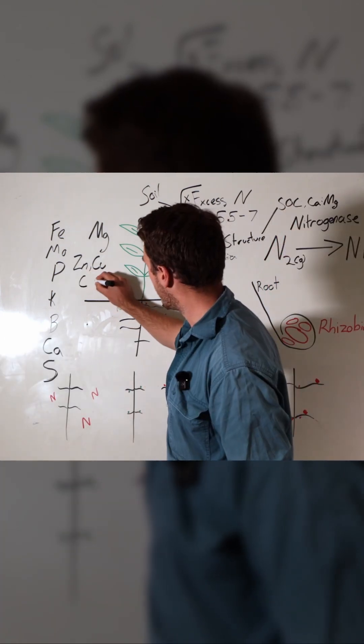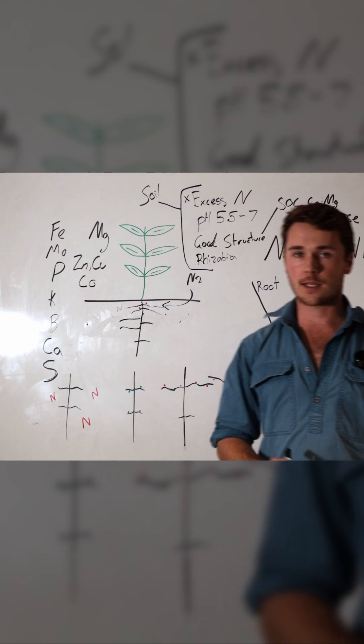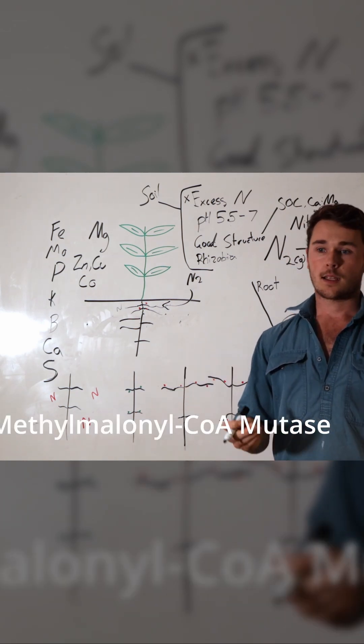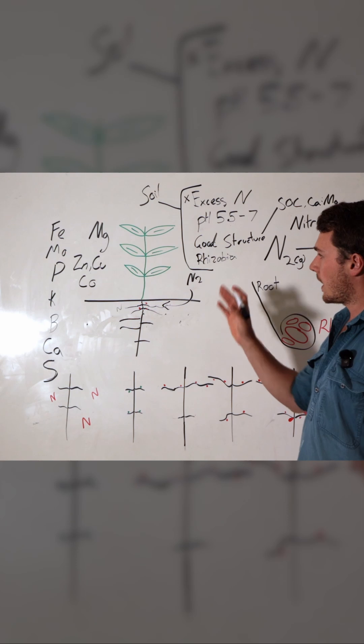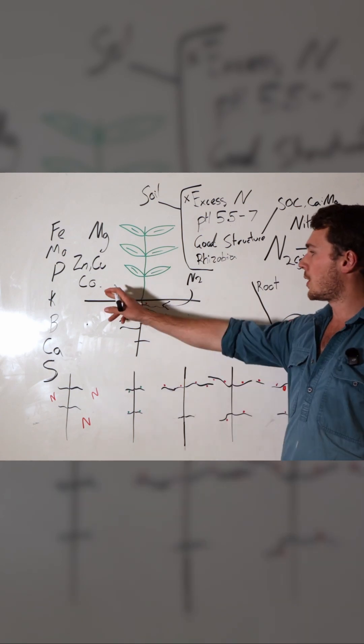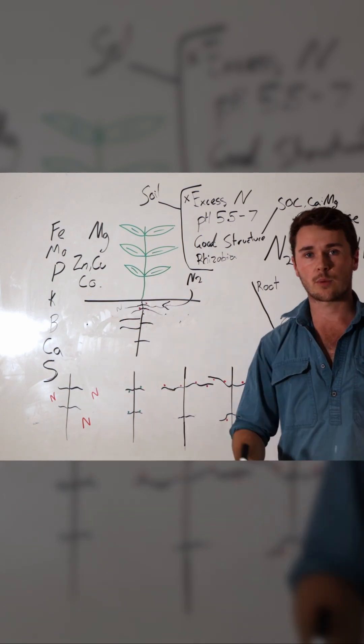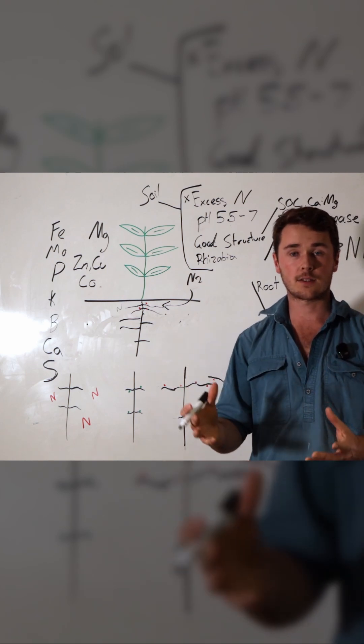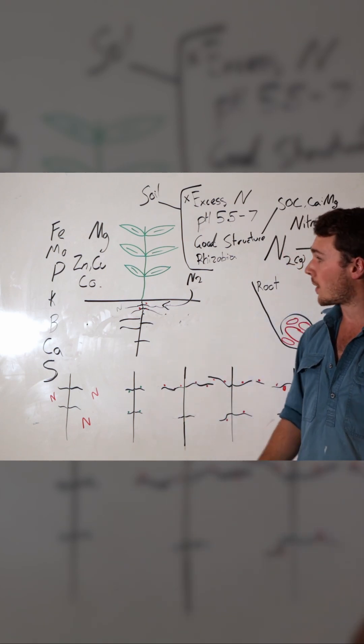Finally, cobalt is required in the production of an enzyme needed for leghemoglobin production. Cobalt also helps govern the size of the rhizobium bacteria. A bigger bacteria is going to fix more nitrogen, so that's quite important.